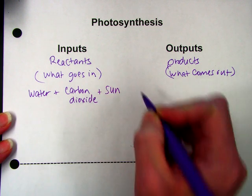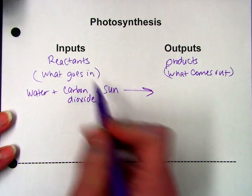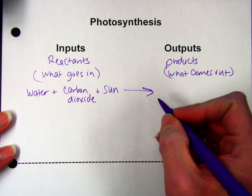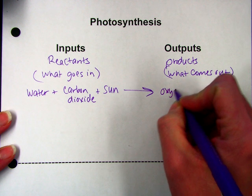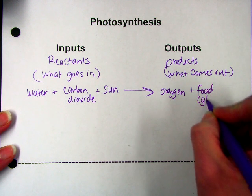A form of energy. And then they mix these three together and produce two products that come out of the reaction. It produces oxygen and it produces food in the form of glucose.